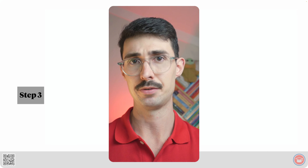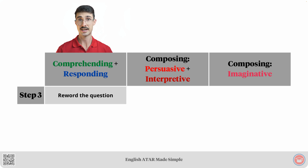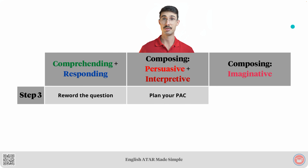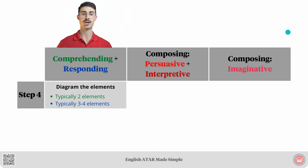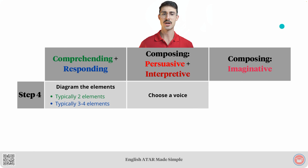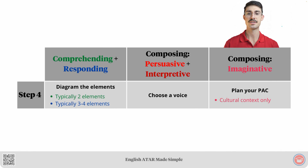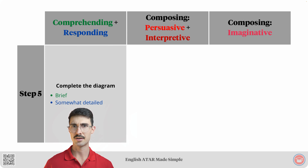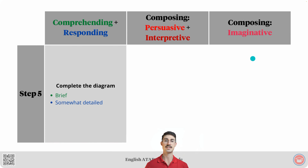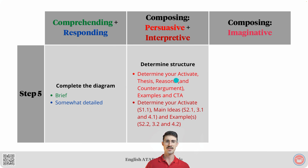This is where things start to vary. Step number three for comprehending and responding questions requires us to reword the question. For persuasive and interpretive questions, we should plan our PAC. And for imaginative questions, we should choose the genre or genres and subject matter. Step number four for comprehending and responding requires us to diagram the elements. For persuasive and interpretive questions, we choose a voice. And for imaginative questions, we plan our PAC — only the cultural context, not the situational. Step number five for comprehending and responding: we complete the diagram from step four. For persuasive and interpretive questions, we determine our structure.